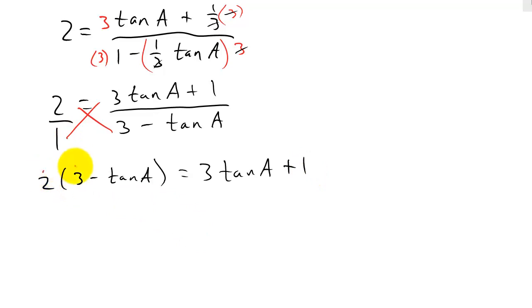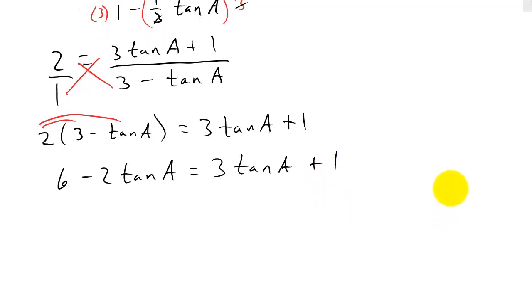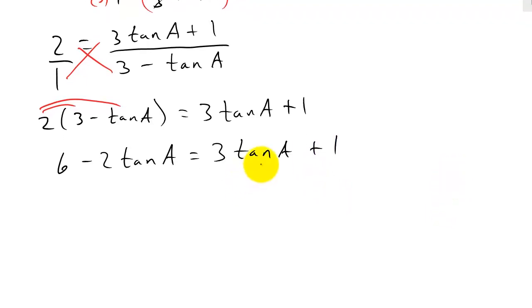And then I want to distribute the 2, and so that's going to give me 6 minus 2 tangent A equals 3 tangent A plus 1. All right, so now it's just kind of like solving for x, but we're just solving for tangent A. So I'm going to, I don't know, how about we just add 2 tangent A to both sides, and then we'll subtract 1 to both sides.